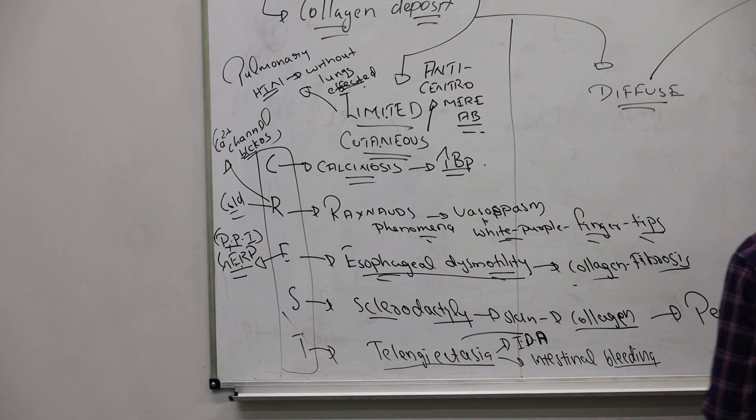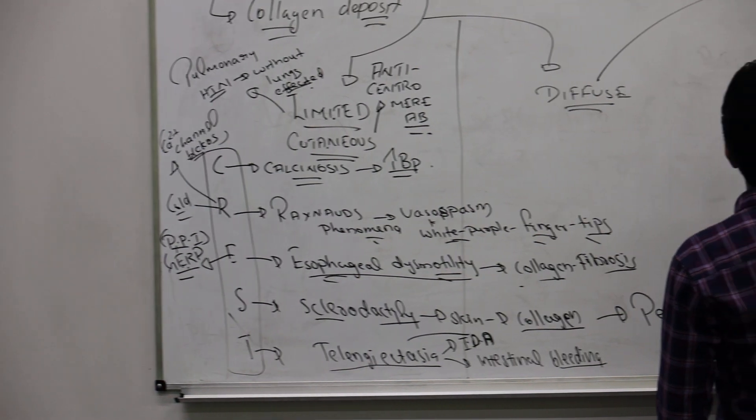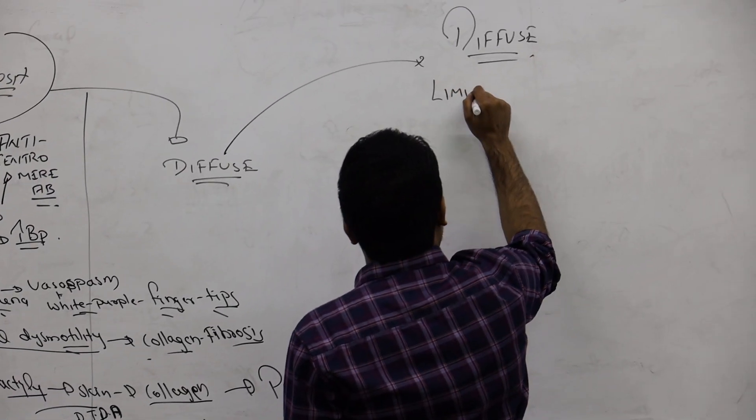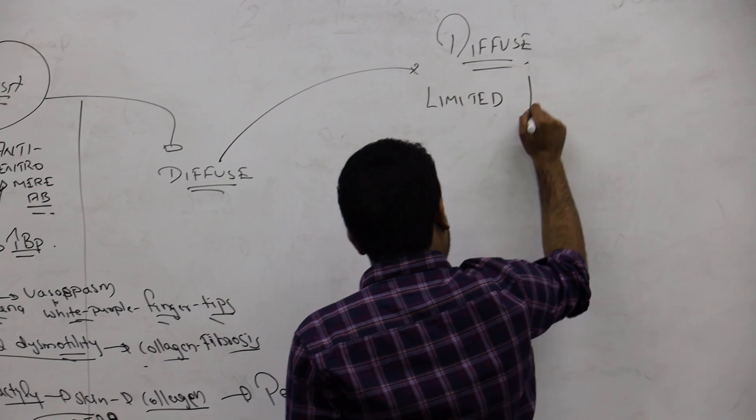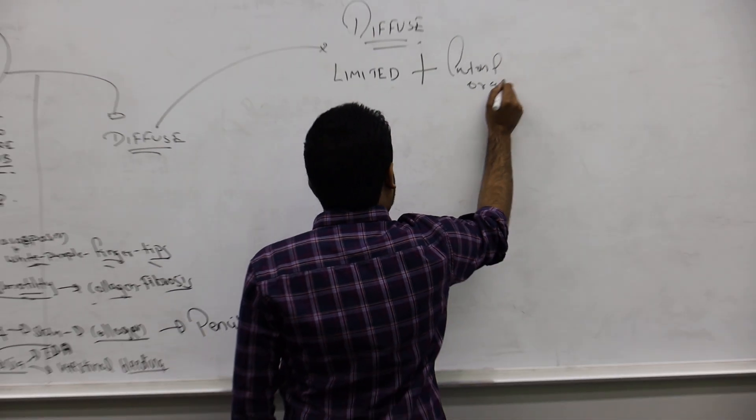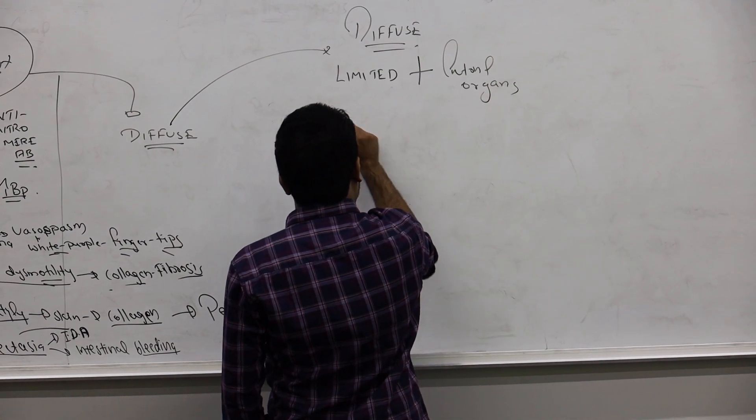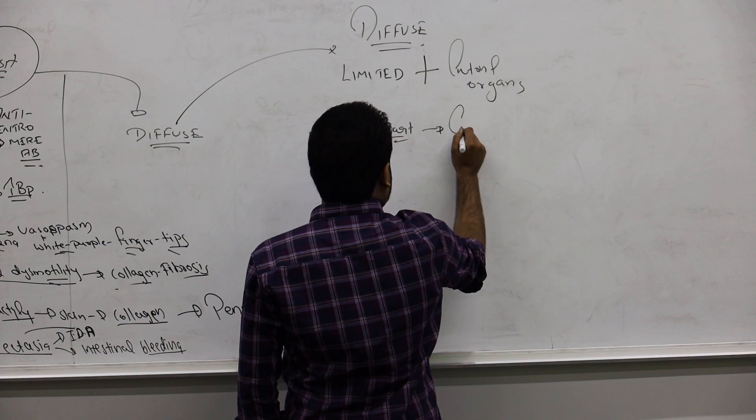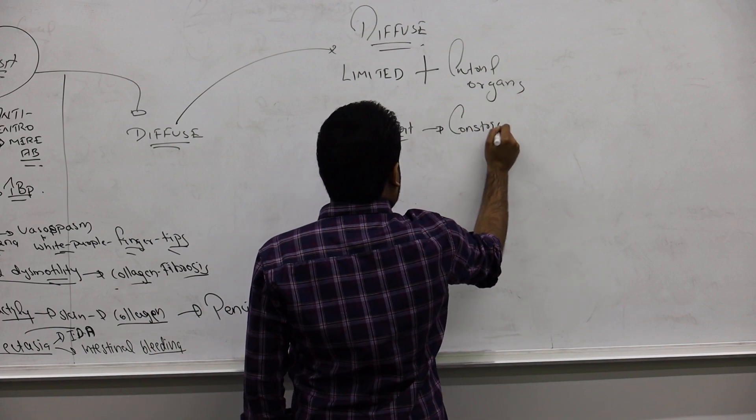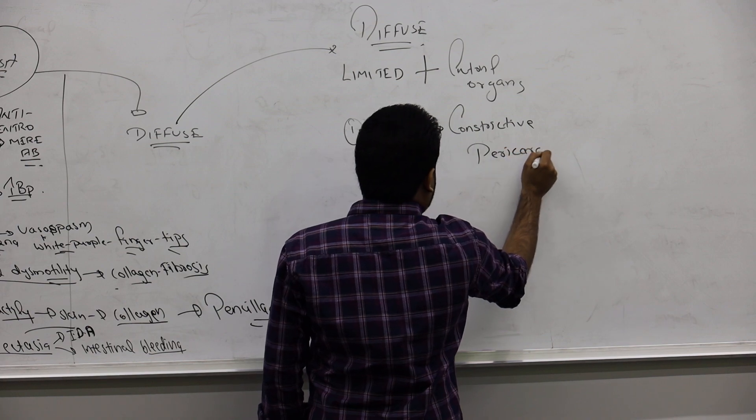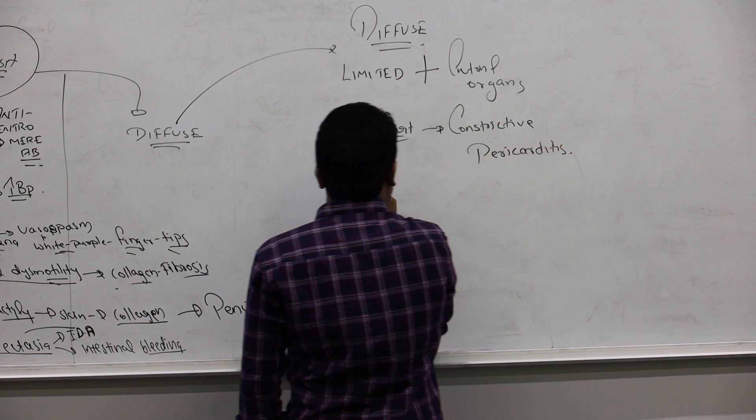Now let's talk about the diffuse one. Diffuse is very easy - you will have all the limited features plus internal visceral organs affected. What are the organs affected? First is the heart - you will have constrictive pericarditis. Patients will have heart issues like constrictive pericarditis.